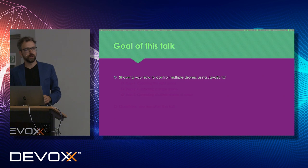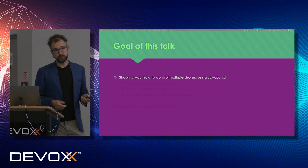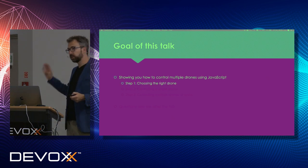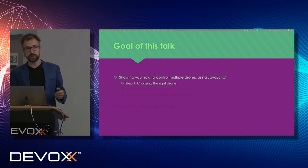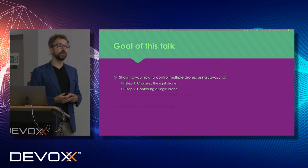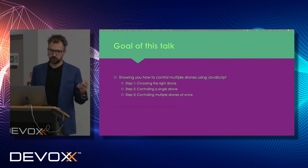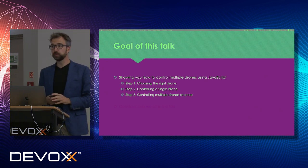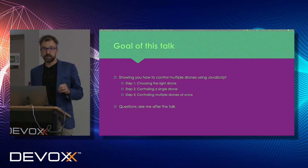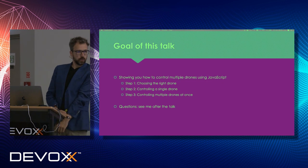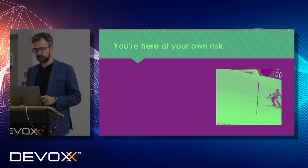So what is the goal of this talk? Showing you how to control multiple drones using JavaScript. We're going to do that in three steps. First, we need to figure out which drone we're going to use. In the second step, we're going to fly a single drone using JavaScript. And in the third step, we'll start controlling multiple drones at once. Questions? See me after the talk, but I think we'll be able to facilitate some questions at the end.